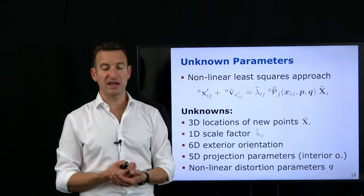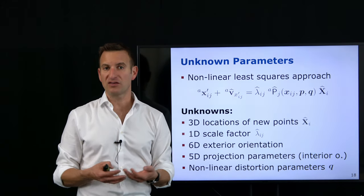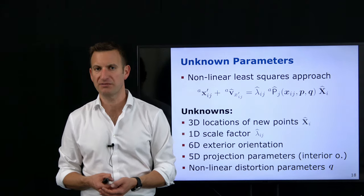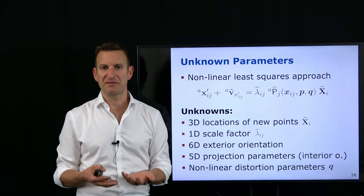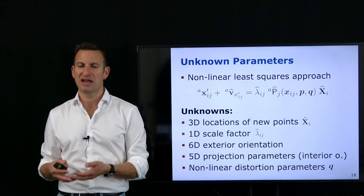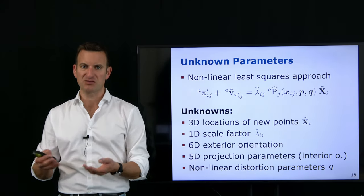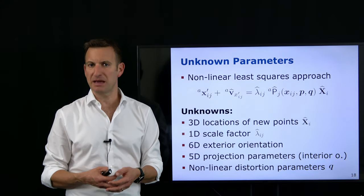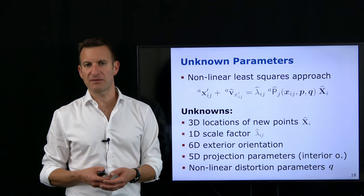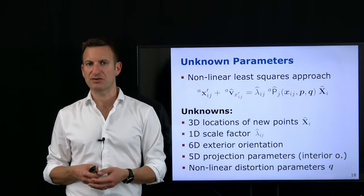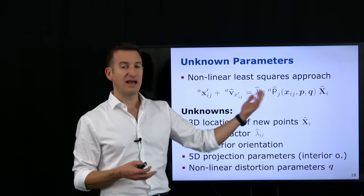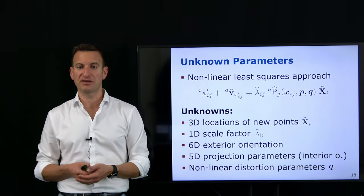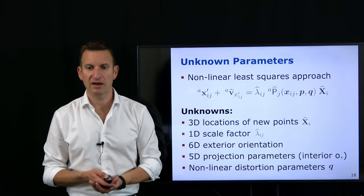We can break the equation into two parts: the calibration matrix, which includes all interior parameters (intrinsics), and the exterior orientation (extrinsics) — the rotation matrix and the location of the projection center. To illustrate the unknowns, let's make a small example: say we have 10,000 images with 1,000 feature points per image, and every point is seen on average 10 times.